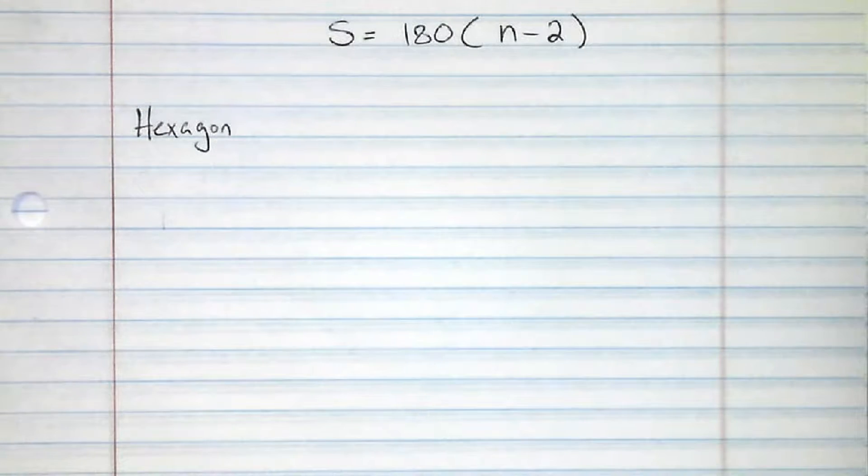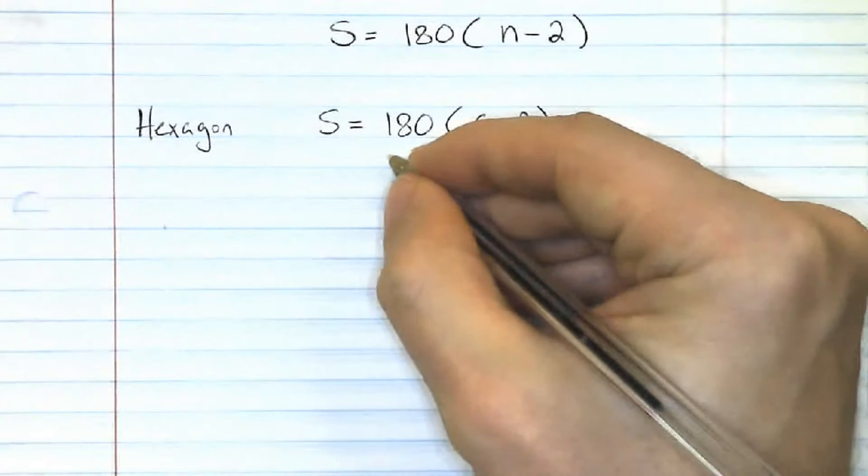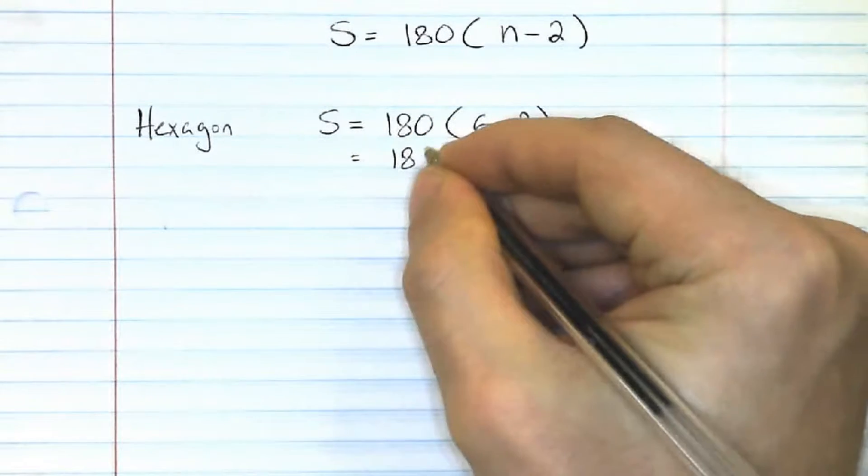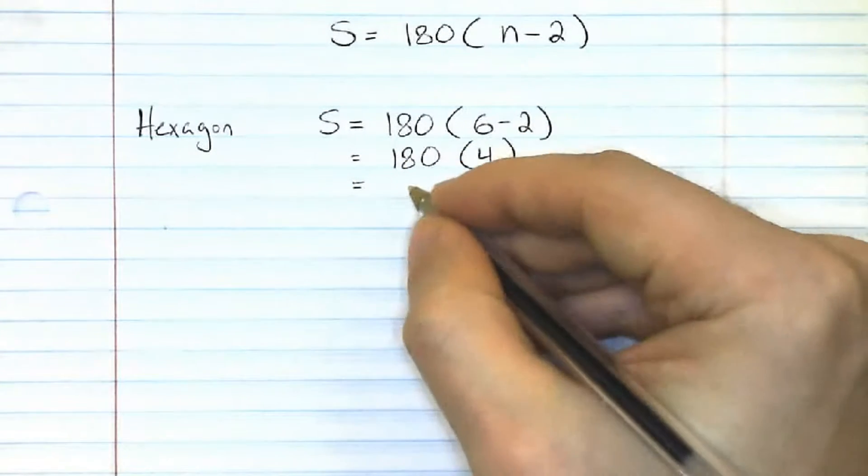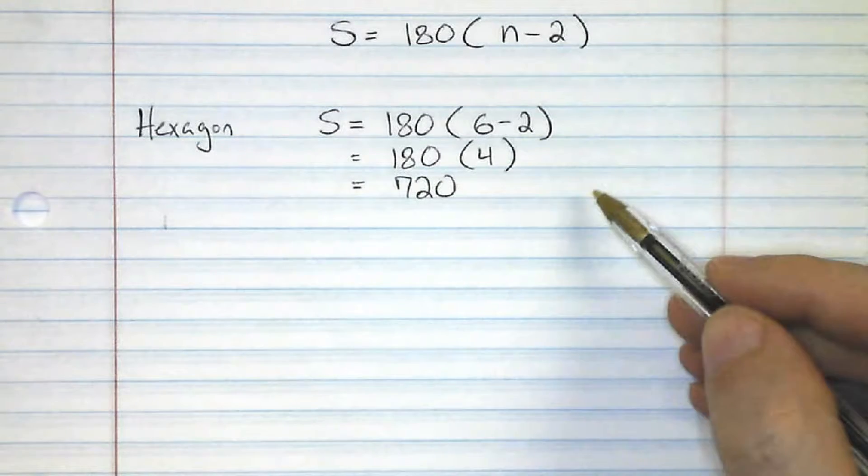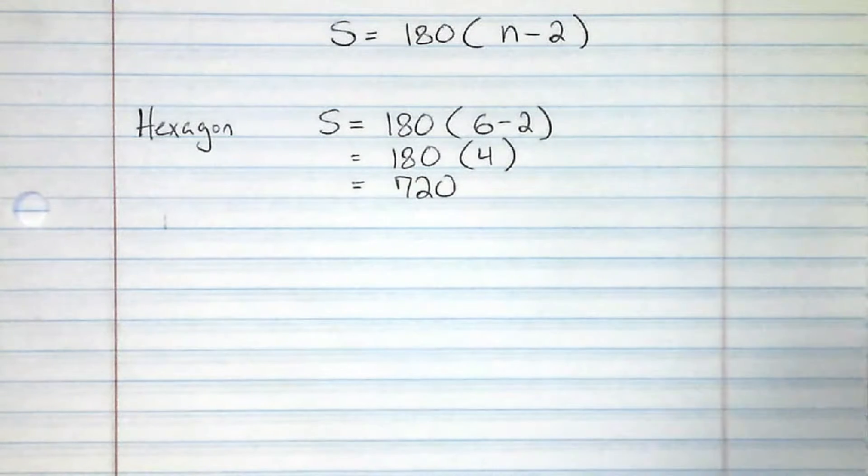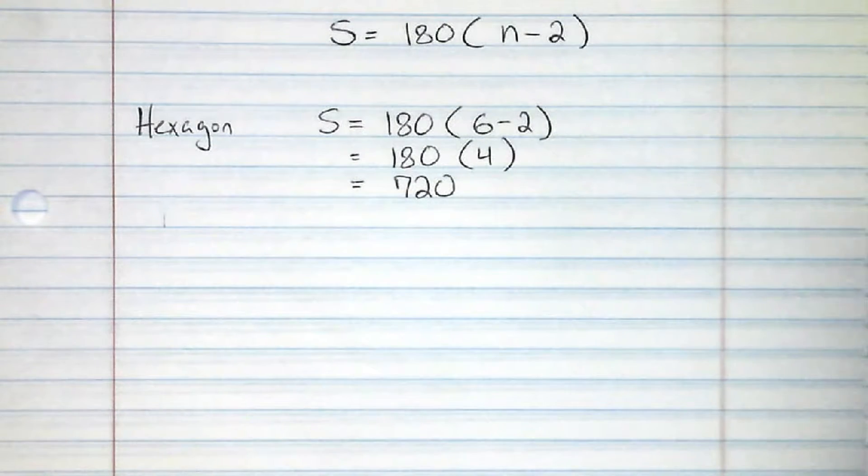We're going to start out with a hexagon. A hexagon has six sides. So if we plug into our formula, we can see that if we measured all of the interior angles in a hexagon, we would have 720 total degrees.